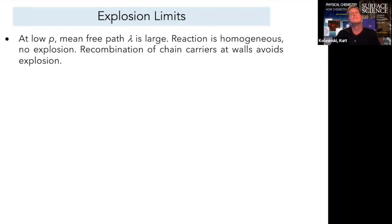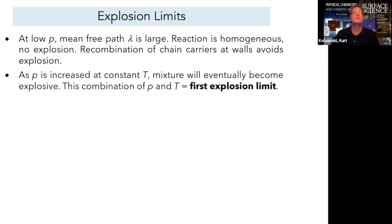What happens at low pressure is that the mean free path lambda is large. In fact, if it's large compared to the size of the vessel, then free radicals get all the way to the edges, they hit the walls, and those chain carriers will be quenched at the walls. No explosion occurs until we increase the pressure.